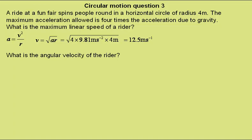What is the angular velocity of the rider? For this we can use acceleration is equal to radius times angular velocity squared. Rearranging for angular velocity is the square root of acceleration over radius.